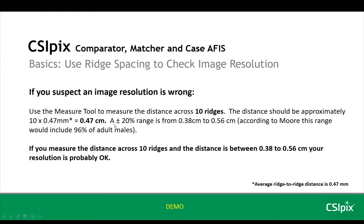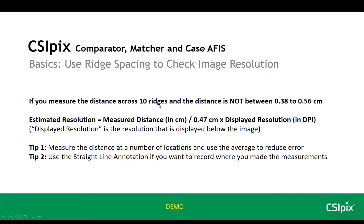Of course it's not going to be perfect, so what's a reasonable range? Taking plus or minus 20% of 0.47 gives a range from 0.38 centimeters to 0.56 centimeters. According to the Moore paper, this range should include about 96% of adult males. So if you measure this distance across 10 ridges and the distance is between 0.38 and 0.56, your resolution is probably OK. If it's not within that range, there is an equation you can use to adjust the DPI.